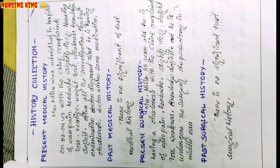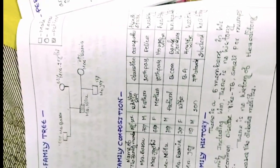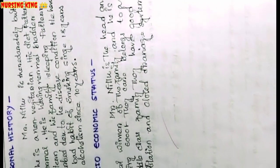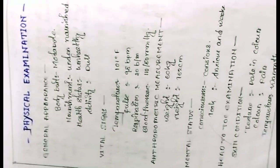After that, history collection. In the history collection, write past and present history, then family tree, family composition, and family history. After that, personal history and socio-economic history.